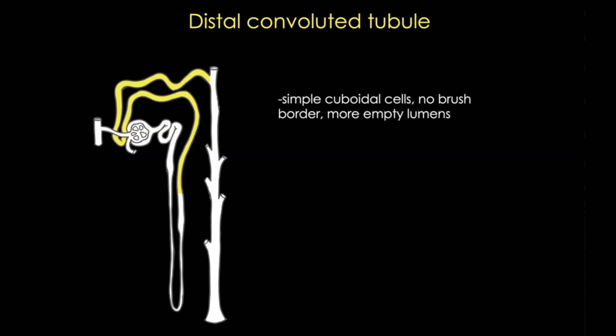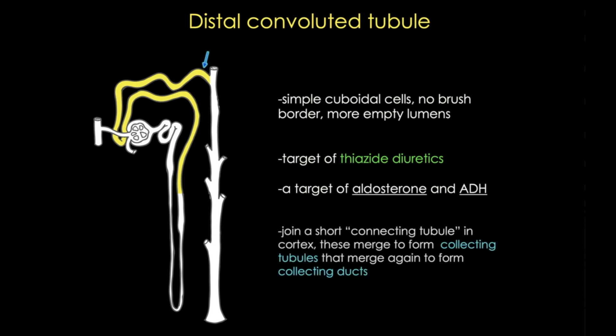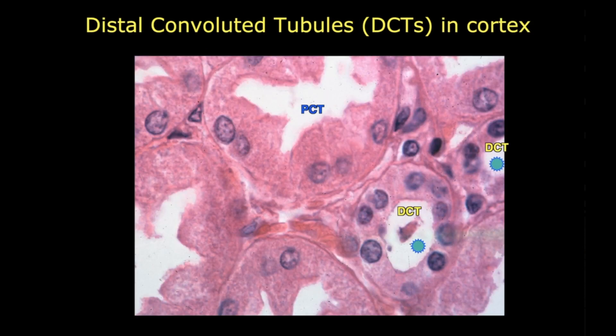Histologically, the distal tubule cells are simple cuboidal cells that lack a brush border, and their lumens are more empty compared to proximal tubule cells. These cells are the target of thiazide diuretics, and they're also a target of aldosterone and ADH, mostly at their most terminal regions. At their most terminal regions, they join a short connecting tubule, which then merges to form collecting tubules, which later merge to form collecting ducts. In this section, you can see the differences between proximal and distal tubules in both cell height and visible nuclei.